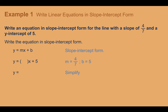Example 1: Write an equation in slope-intercept form for the line with a slope of 4/7 and a y-intercept of 5. Slope-intercept form is y equals mx plus b. The slope is 4/7, so we plug that in for m. The y-intercept is 5, so we plug it in for b. If the y-intercept were negative, we'd use minus instead of plus. Simplified: y equals 4/7x plus 5.